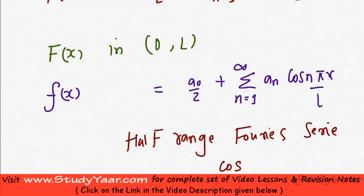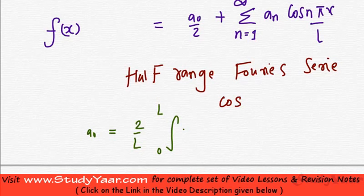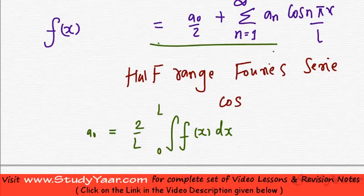Over here, what is your a0? Your a0 is going to be 2 upon L, integration 0 to L, capital F(x) dx. And between 0 to L, what is your capital F(x)? It is your small f(x). So essentially, your half range cos series, a0.